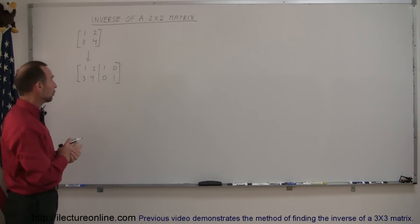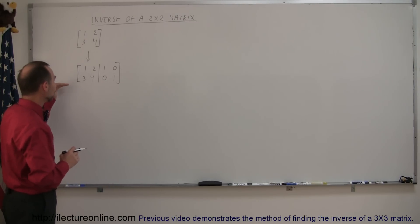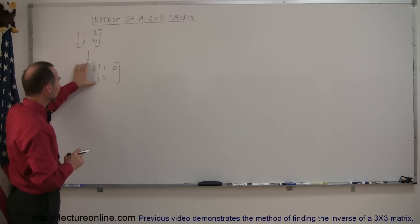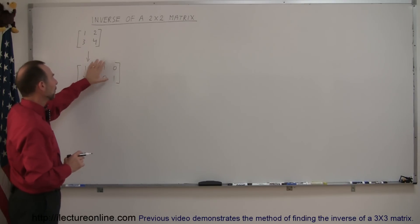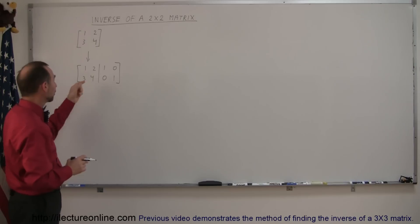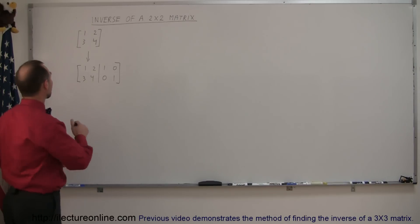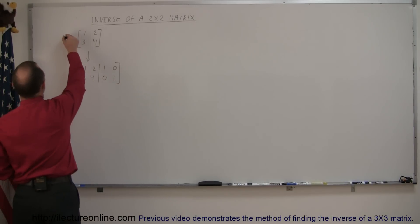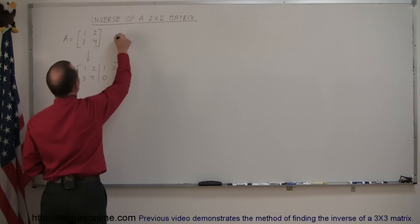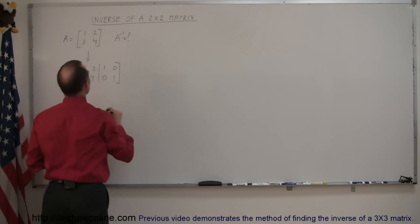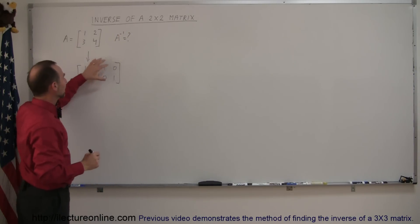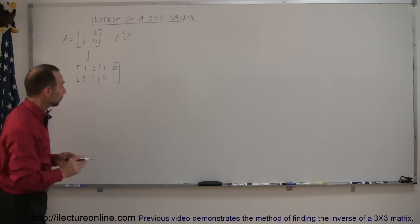What we're going to do is go through row operation steps to make the left side look like the identity matrix, and what we end up with on the right side will then be the inverse of the original matrix. So if we call this matrix A, we're looking for the inverse of A, which will be located on the right when we're done.